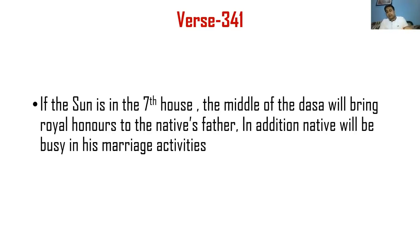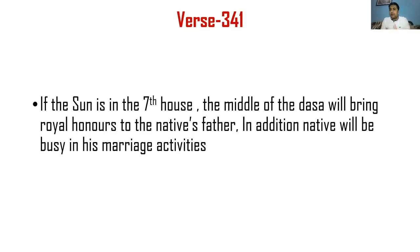What is meant here is that the dasha lagna has been used. So if the Sun is in the seventh house, during the middle of the dasha the Sun will progress to the seventh house. Using the Sun as the dasha lagna (ascendant), the seventh house gets activated and the native gets married. At the same time, when the seventh house from the Sun activates, it is fifth to the father, representing royal honors and top position from the government.